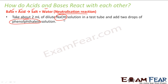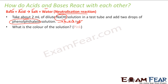Phenolphthalein is an indicator. What is the color of the solution? It is pink. In a basic solution, phenolphthalein solution is pink. So we have this test tube with NaOH, and since NaOH is a base, the moment you add this indicator it becomes pink.